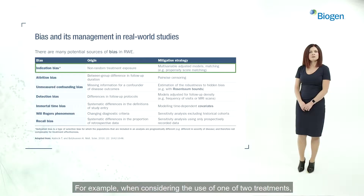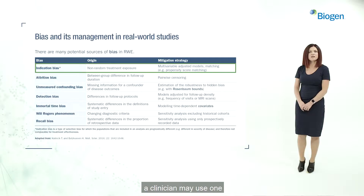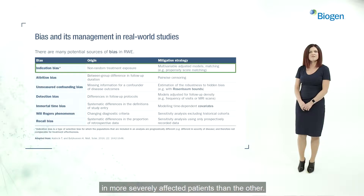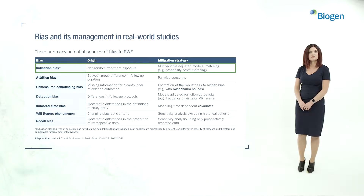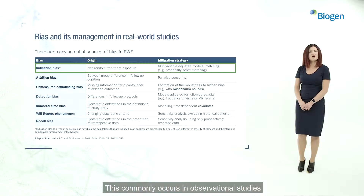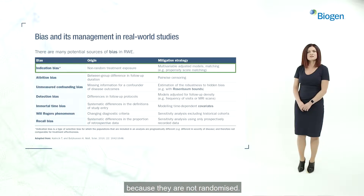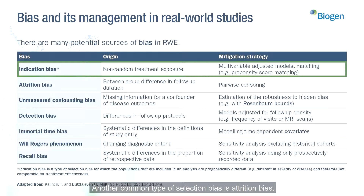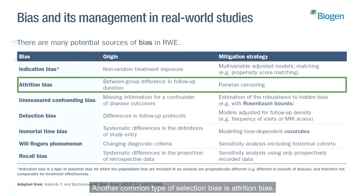For example, when considering the use of one of two treatments, a clinician may use one in more severely affected patients than the other. This commonly occurs in observational studies because they are not randomised.